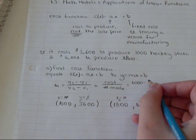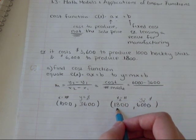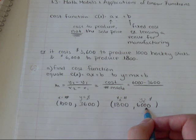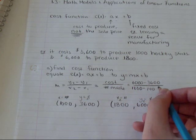So $6,000 minus $3,600 over this is x2 automatically if this is y2, $1,800 minus $1,000.